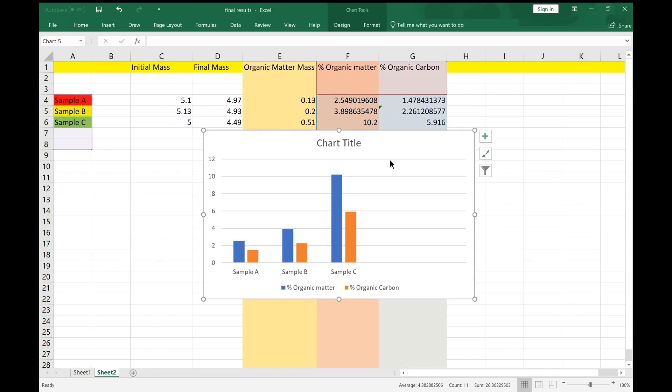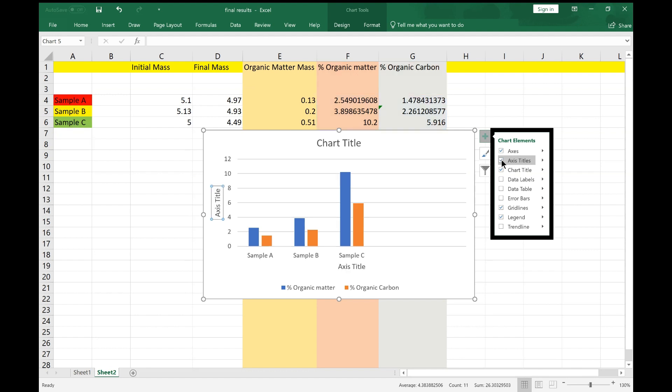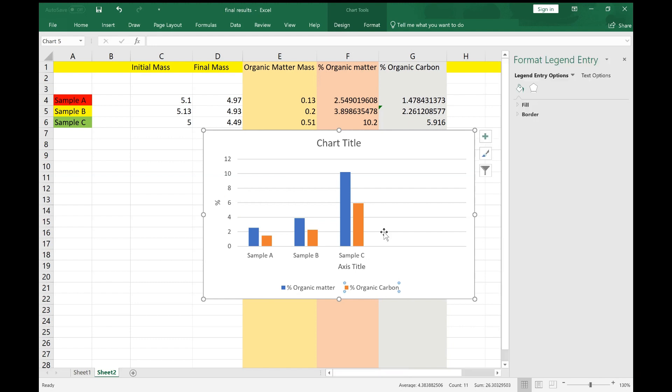Now I have a chart title. If you look along the bottom, I have a legend—blue is organic matter, orange is organic carbon. But I'm going to add a couple of things here. I'm going to add axis titles. So here I'm going to have percentage organic, or percentage, that's its unit. And here I'm going to have samples. I might actually want to change sample A to tell me what it contained, so I might say that's a silage field.